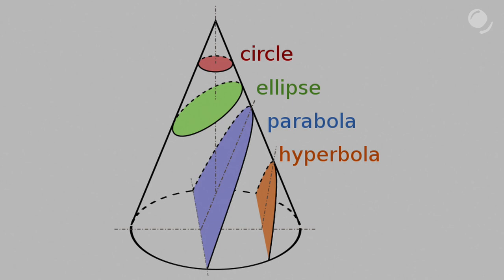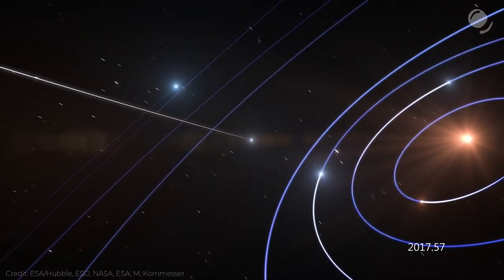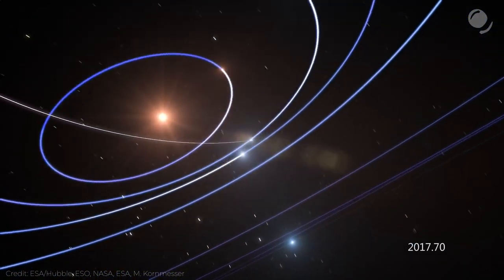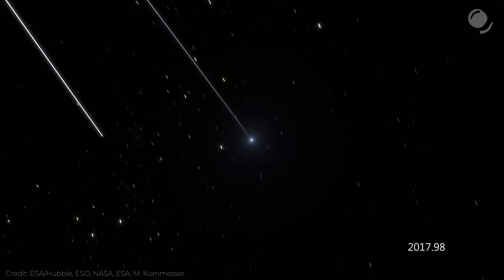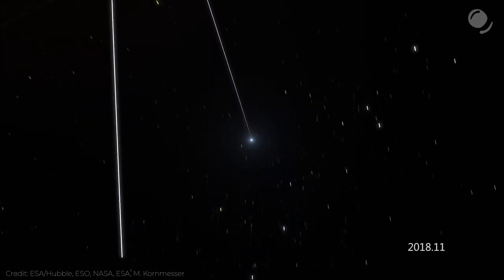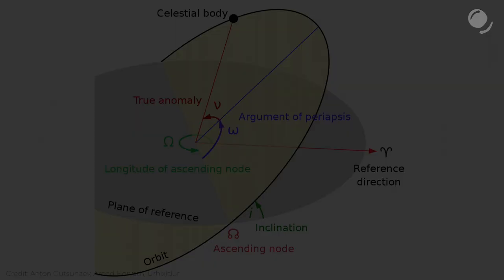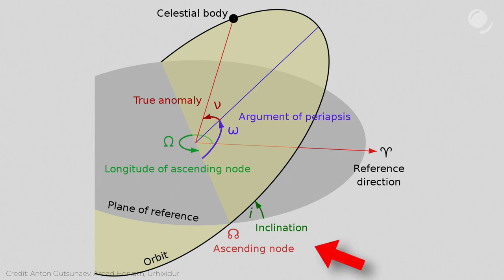First known interstellar objects Oumuamua and Borisov comet followed hyperbolic trajectories around the sun. They entered the solar system and then they left and will never come back. All those four shapes - a circle, an ellipse, a parabola and a hyperbola - are conic sections. So if we want to send a spacecraft to interstellar space we need to do it so that it would go from an elliptical orbit around the sun to a hyperbolic orbit, like NASA did with Voyagers. Another orbital element is inclination, how much the planet's orbit is inclined relative to the ecliptic.